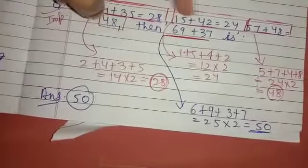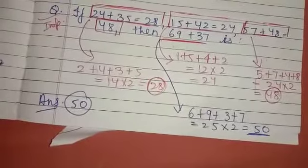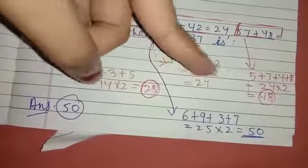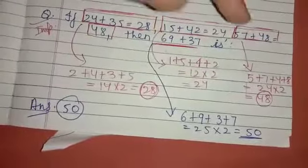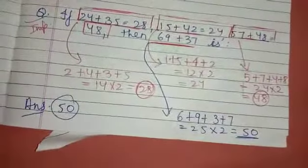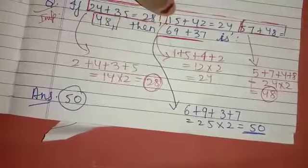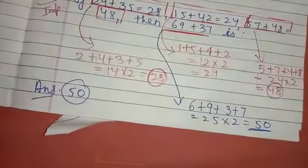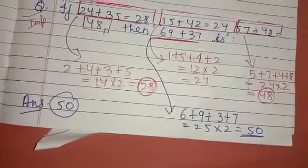For 15+42: 1+5+4+2 = 12, multiplied by 2 = 24. For 57+48: 5+7+4+8 = 24, multiplied by 2 = 48. Now for 169+37: 1+6+9+3+7 = 26... wait, that gives 25 into 2 = 50. So the answer is 50.